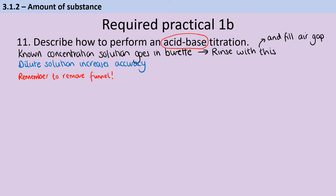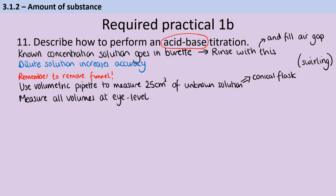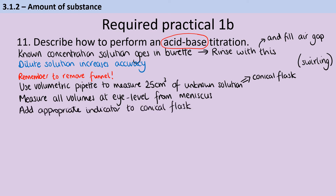Once your burette is set up, use a volumetric pipette to measure 25 cm³ of the solution whose concentration you don't know, and transfer that to a conical flask. You use a conical flask rather than other glassware because it allows you to swirl without liquid splashing out. As with any volume measurement, it's important to measure at eye level and from the meniscus. Then add a couple of drops of an appropriate indicator to your conical flask.